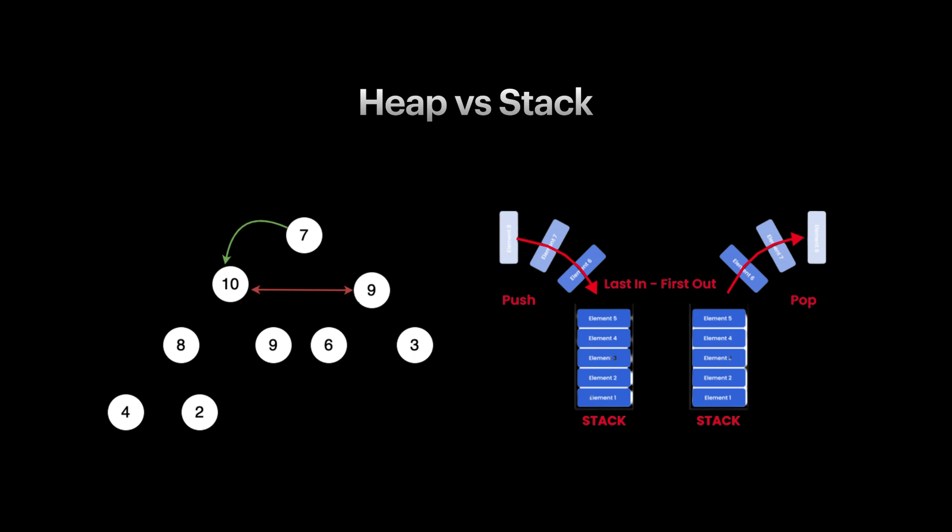Variables allocated on the stack are stored directly into memory, and accessing memory is very fast because we can allocate and deallocate memory simply by incrementing and decrementing the stack pointer. On the heap, allocation is more complex because you need to search for an unused block of memory, which makes it slower compared to the stack. You can use the stack when you know how much data you need to allocate before compile time and it's not too big.